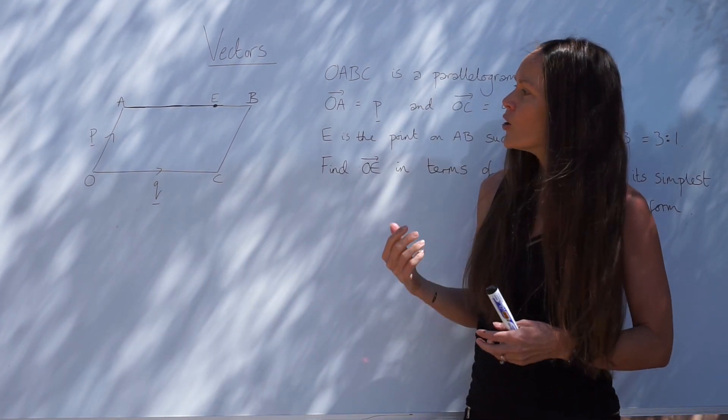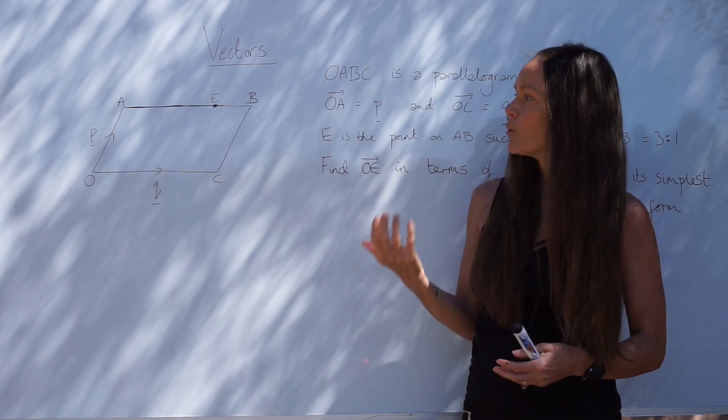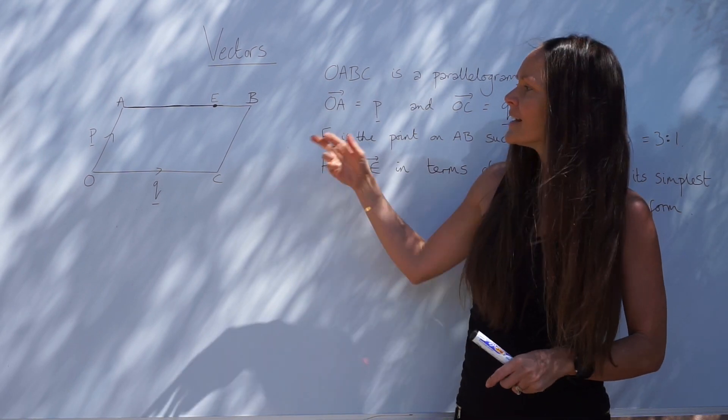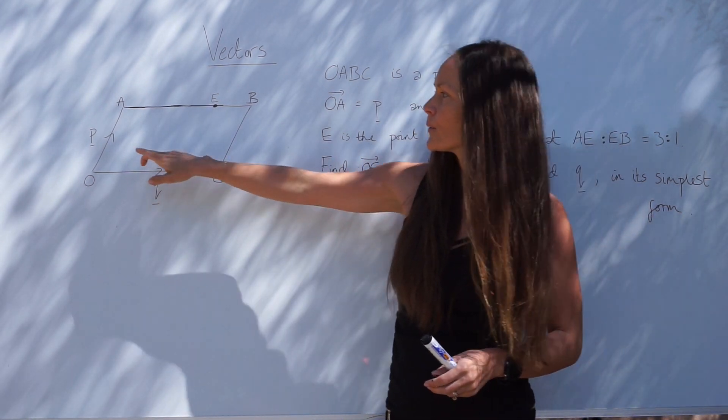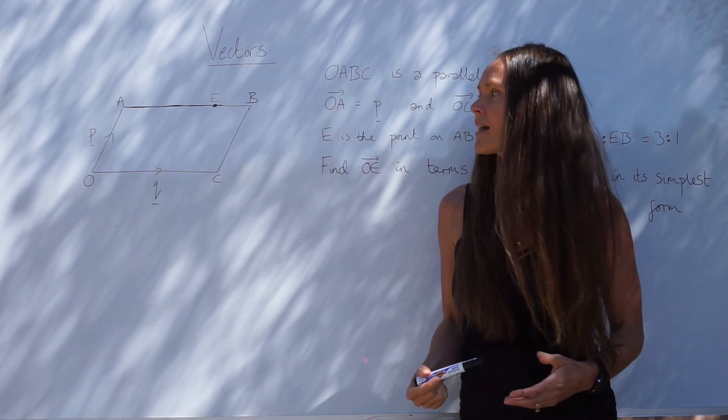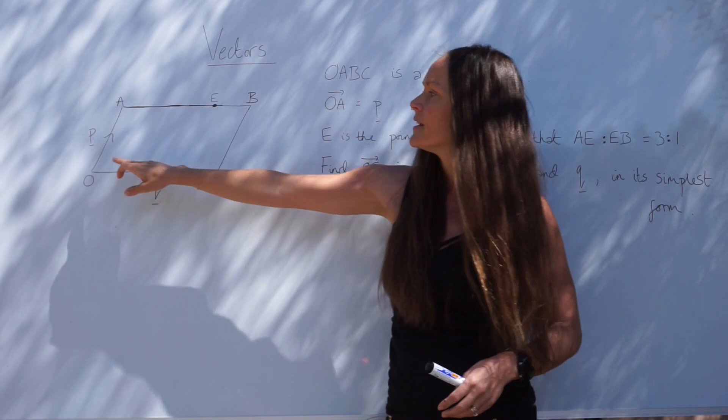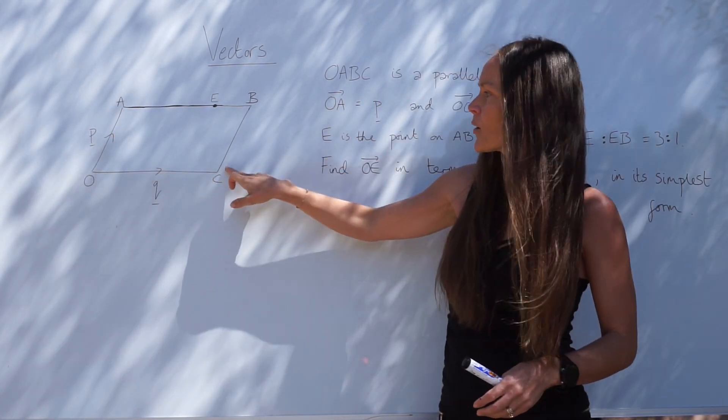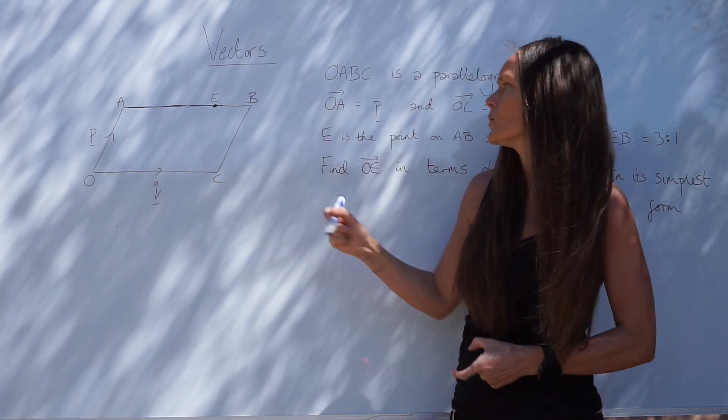Something that's important with vectors, it's a parallelogram. So this line is parallel to CB, and it's also the same length. That means if this is vector P, so is this one. You can write that on. So that's also vector P.